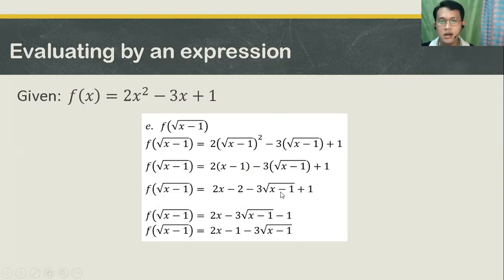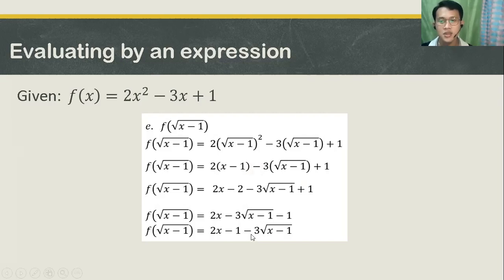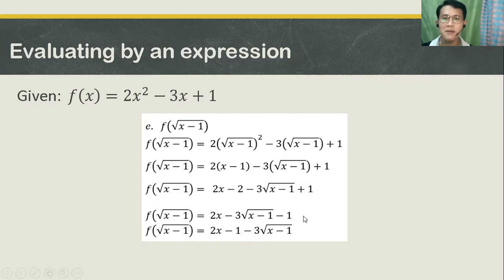Combine like terms. It will turn into 2x minus 3 square root of x minus 1, minus 1. Why is it negative 1? Because negative 2 plus 1, that is negative 1. So rearrange them — start first with 2x, then minus 1, and lastly minus 3 square root of x minus 1. Therefore, our f of the square root of x minus 1 is equal to 2x minus 1 minus 3 square root of x minus 1.